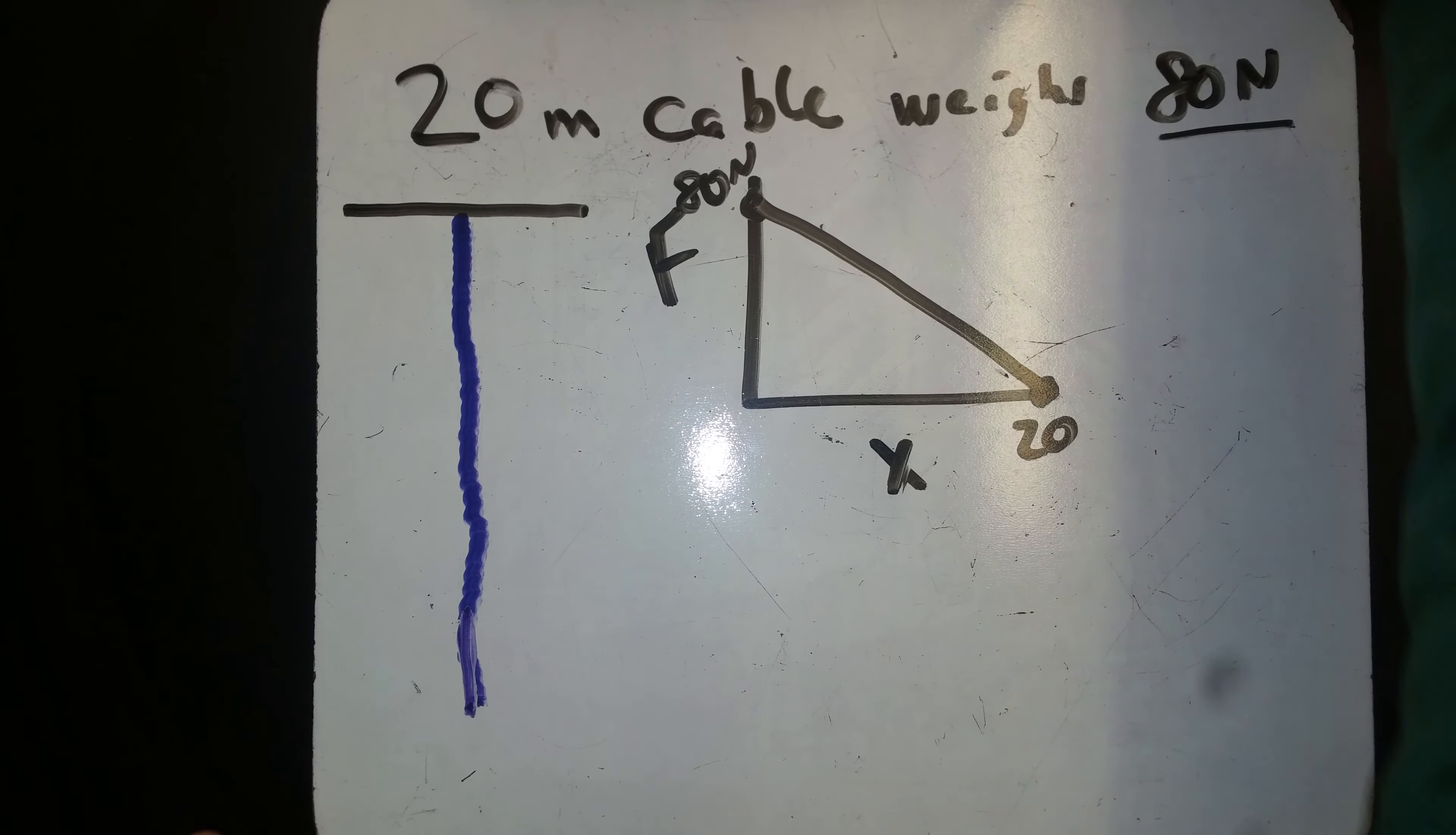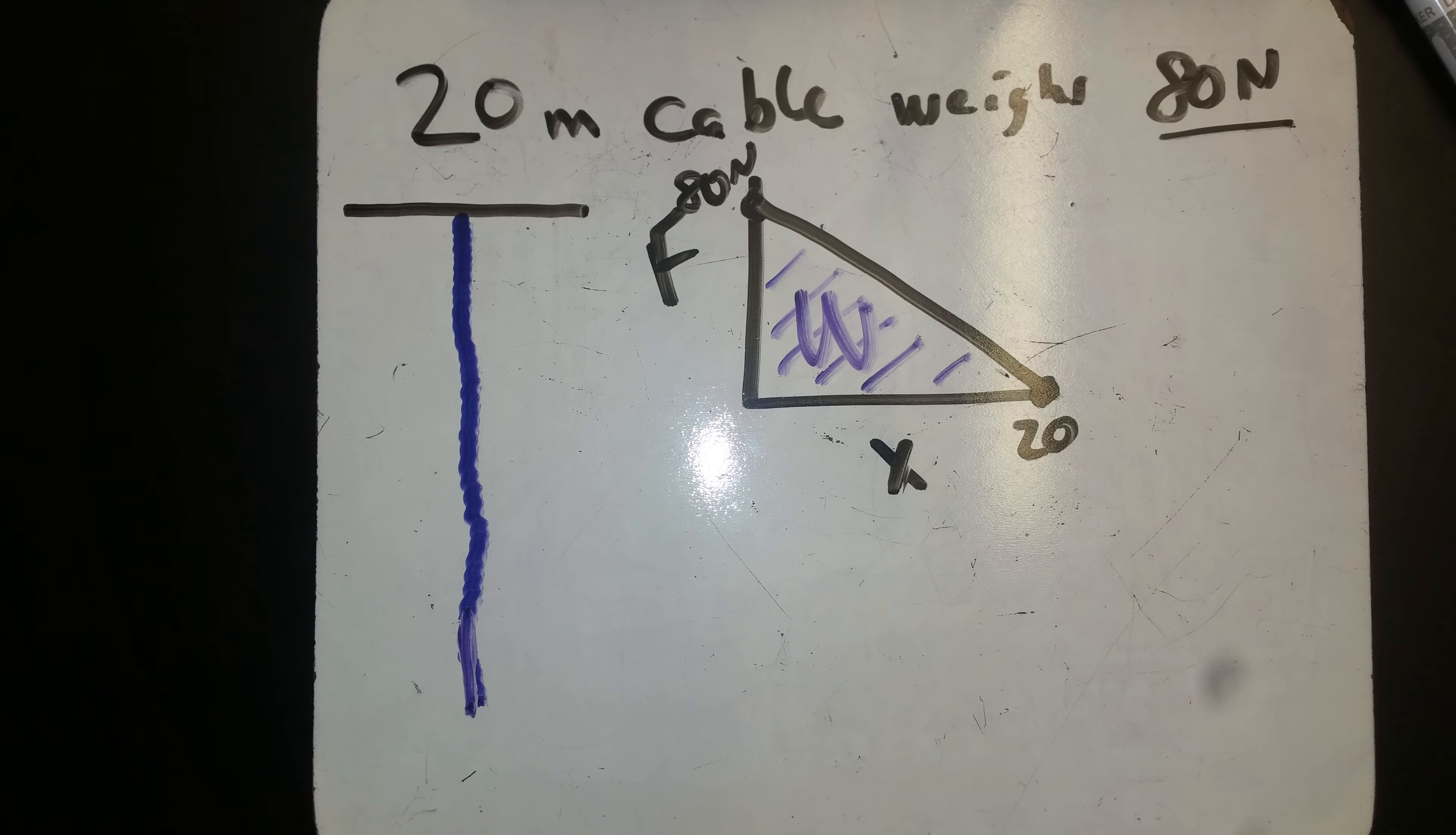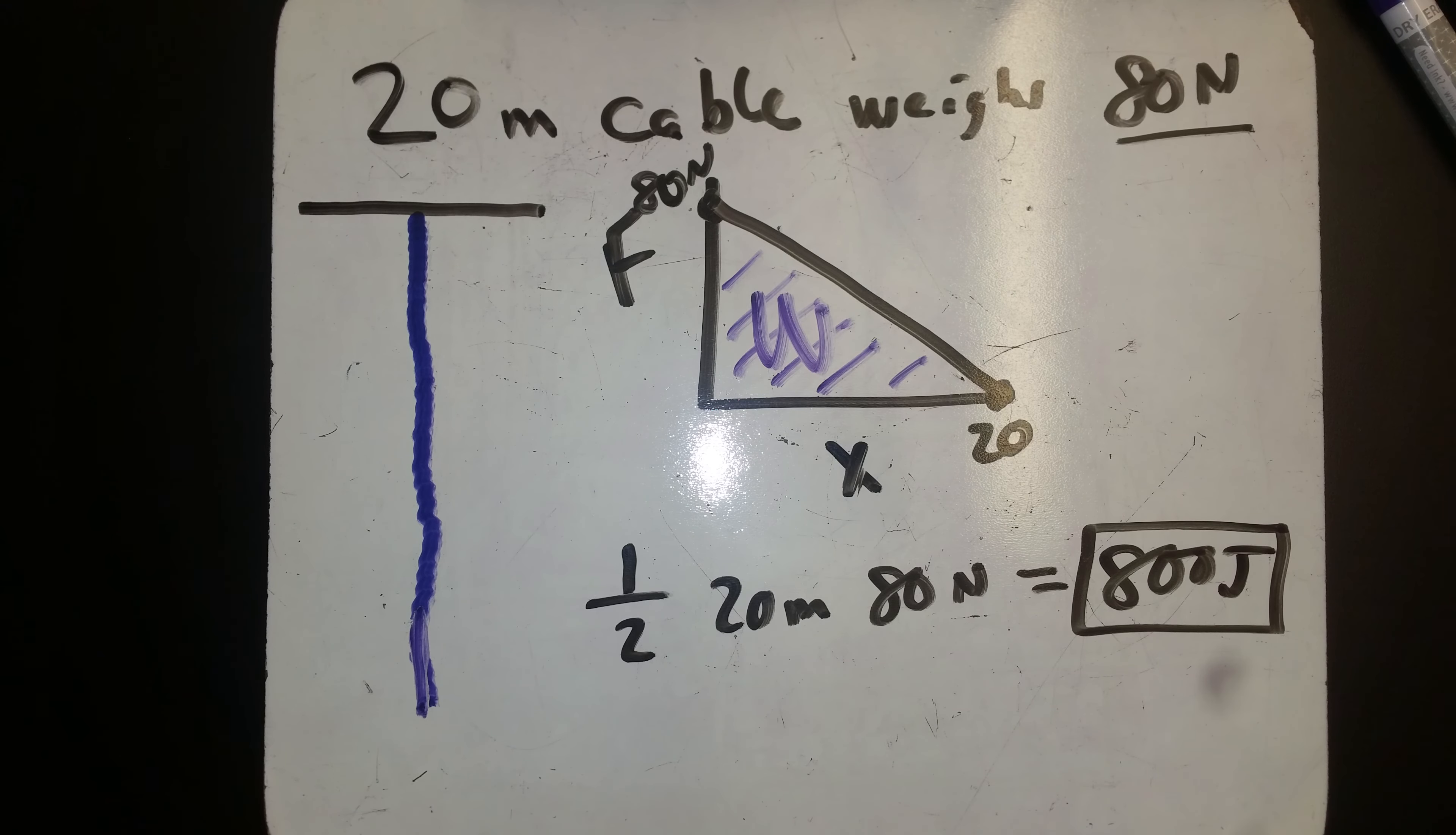We know that the area under the curve here is our work done. We can just say that's a triangle, it's one half the base, which is 20 meters, times the height, which is 80 newtons, gives us 10 times 80 or 800 joules. Work done: newton meters and joules.